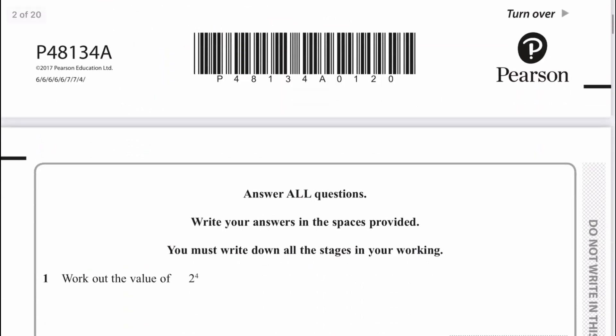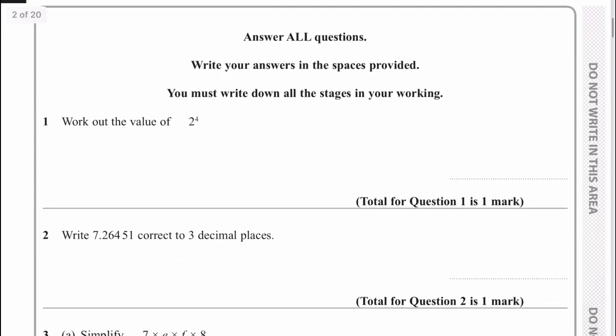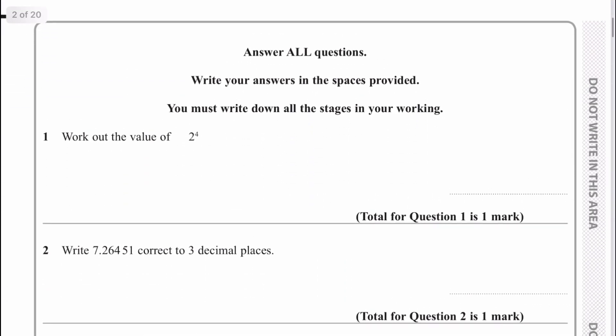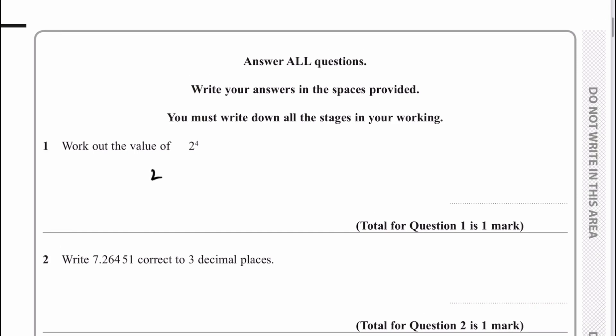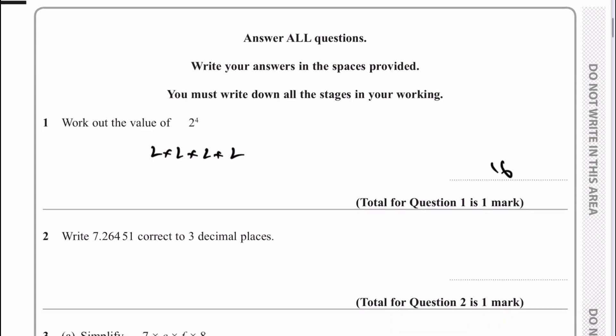Please do stop the video, have a go at each of the questions and then compare your solutions. Let's look at question number 1: find the value of 2 to the power of 4. Well, that basically means 2 times 2 times 2 times 2, and that's going to give you a total value of 16.